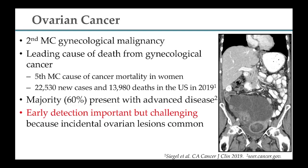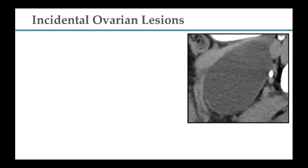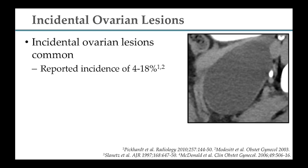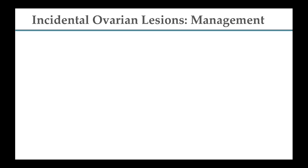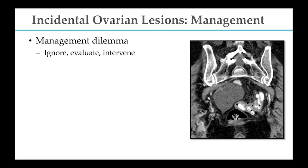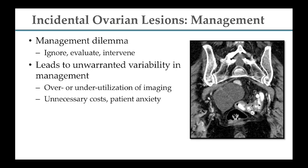Early detection is challenging because incidental ovarian lesions are very common. Depending on which study you quote, the reported incidence is 4 to 18 percent, depending on the population studied. Studies that focus on older women tend to have higher incidence. But the vast majority of these lesions are benign. About 60 to 70 percent of incidental ovarian cysts resolve spontaneously, and that presents a management dilemma. We often don't know if we should ignore a lesion, evaluate it with ultrasound or MRI, or intervene and send the patient to surgery.